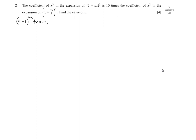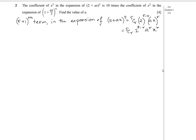So let's begin by finding the (r+1)th term for both expansions. The (r+1)th term in the expansion of (2 + ax)^5 equals 5Cr times 2^(5−r) times (ax)^r, which can be written as 5Cr times 2^(5−r) times a^r times x^r.